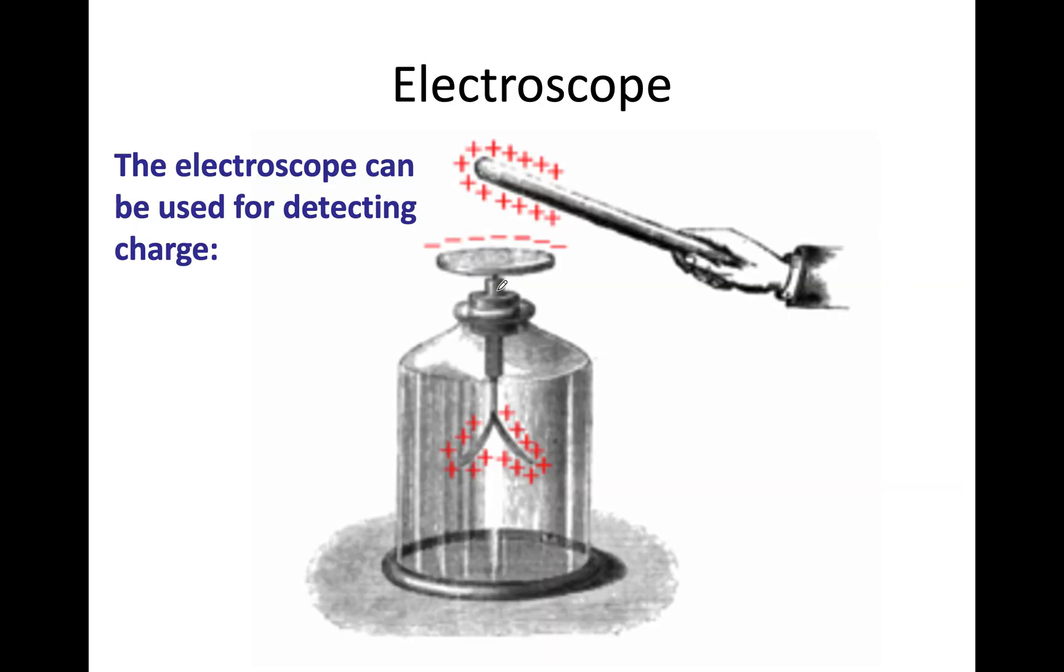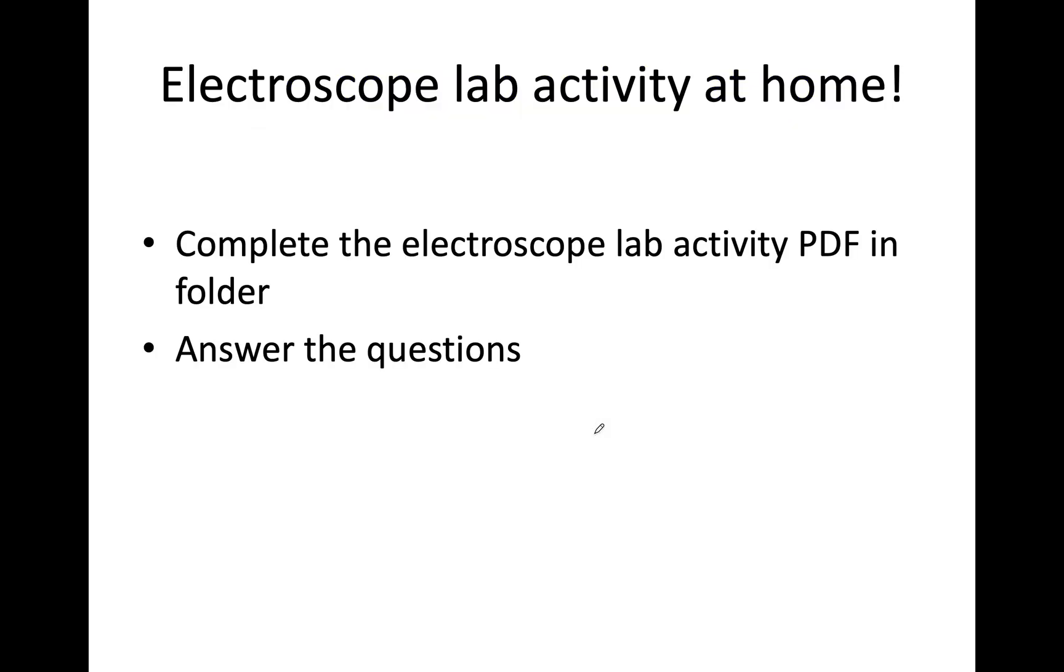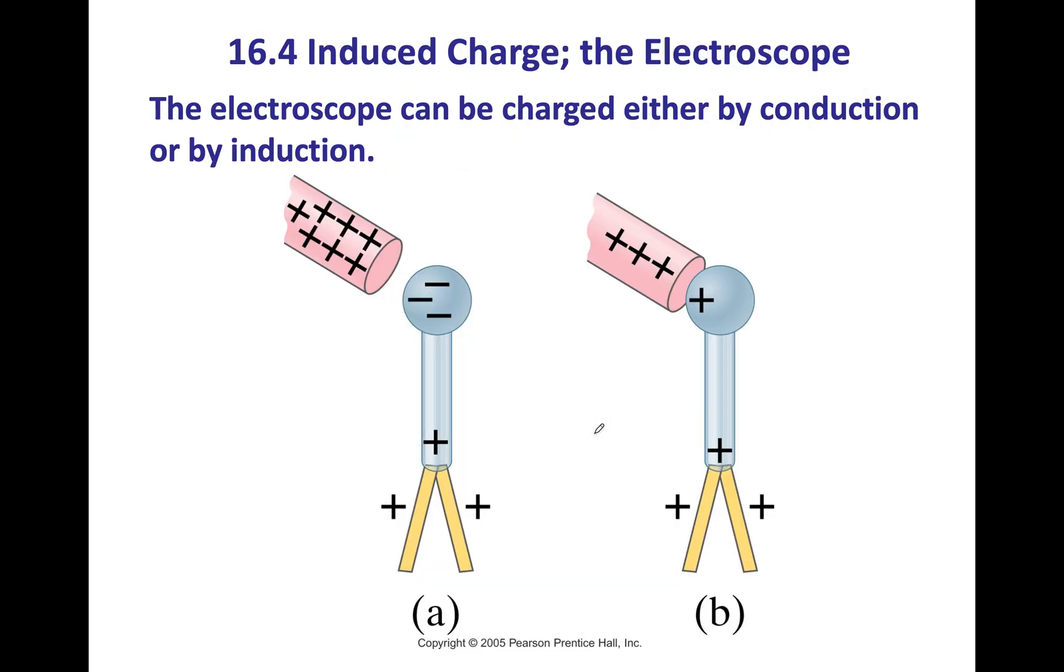And electroscope is something that we use to detect charge as well. You have a charged rod if you bring it close to a metal plate. If we have electrons in here, all along, they will come up to the top of the plate and spread out here. Leaving only positive charges. Because these are positive, this leaf and this leaf will repel. That's how you know there is a charge on your object.